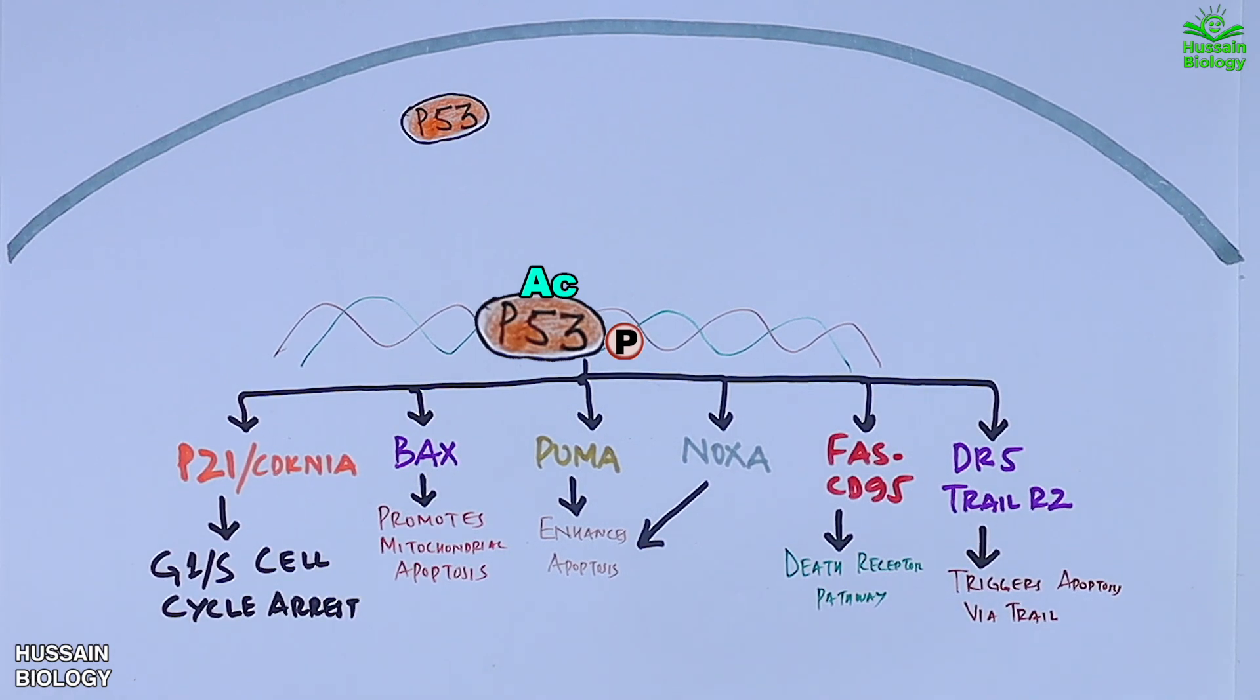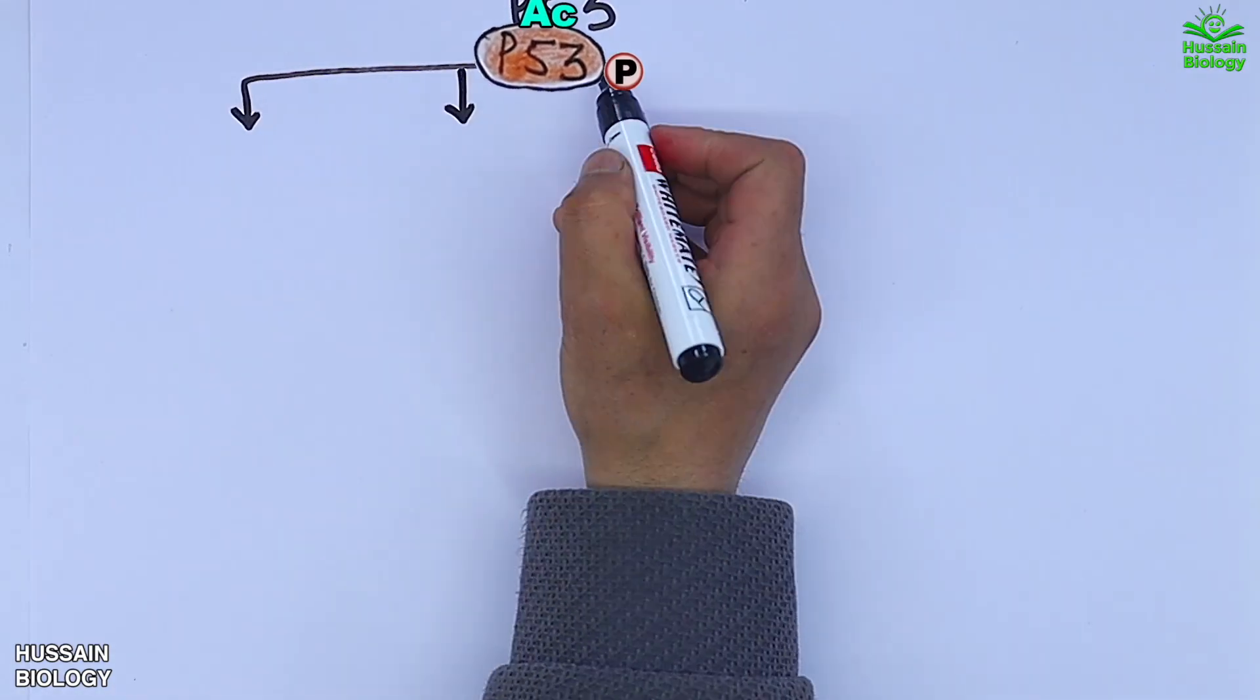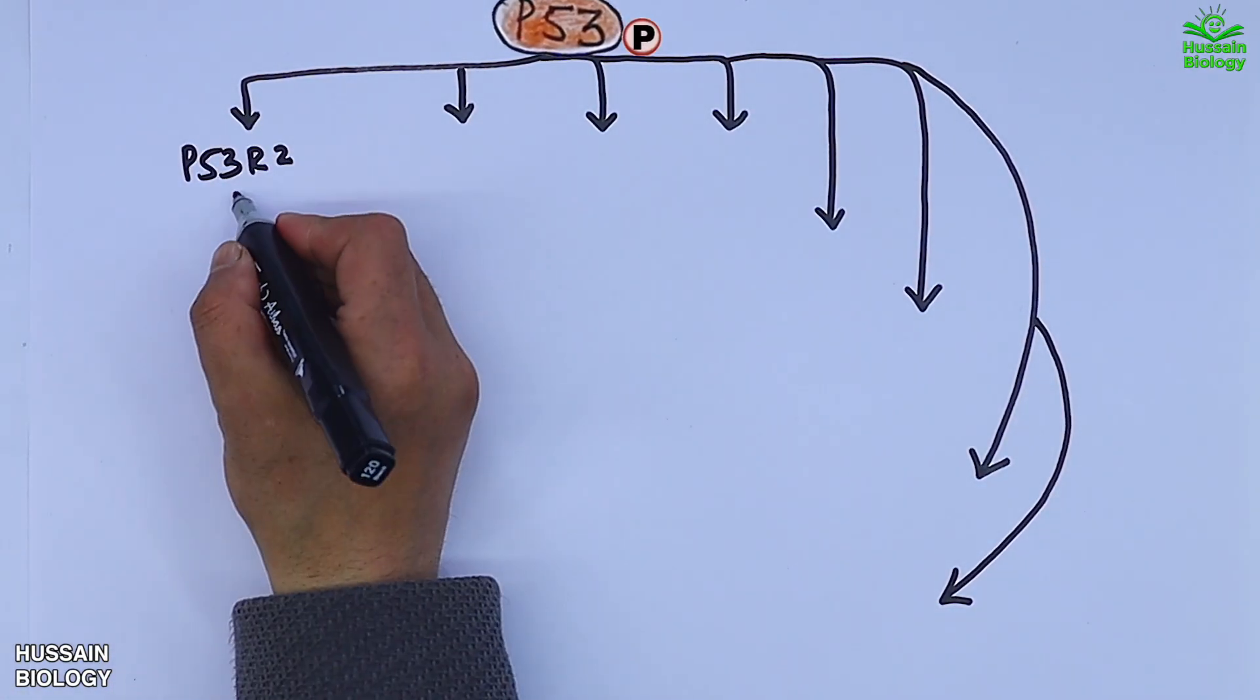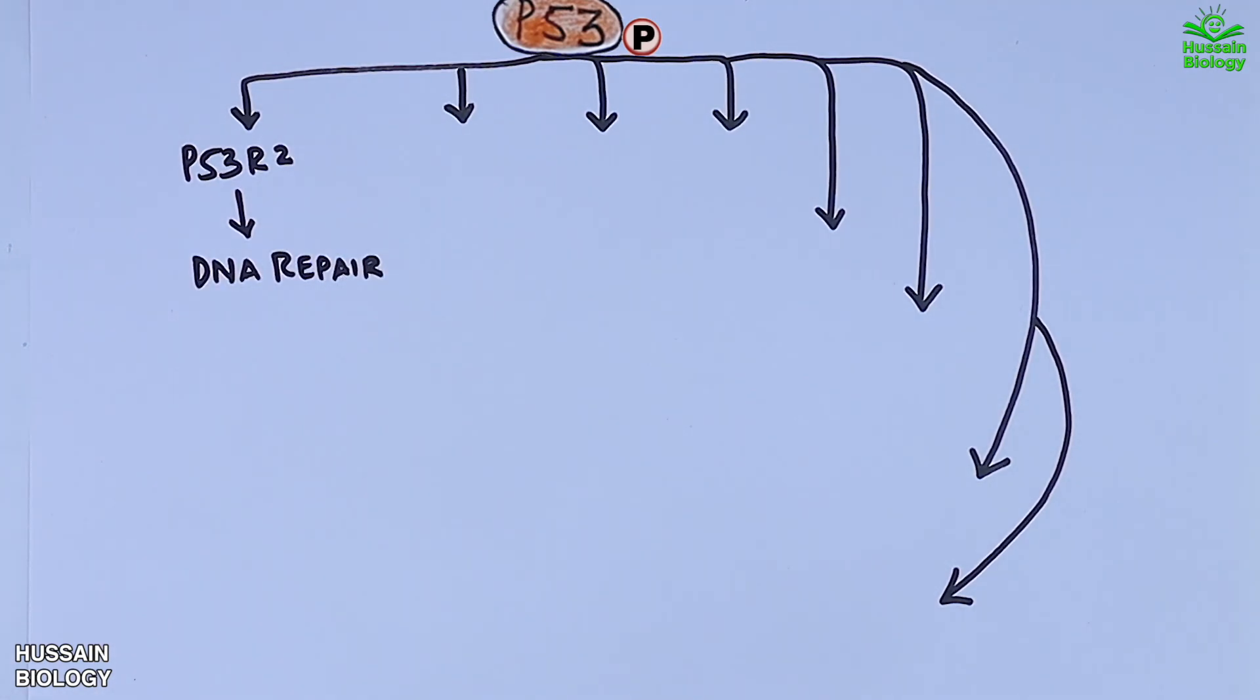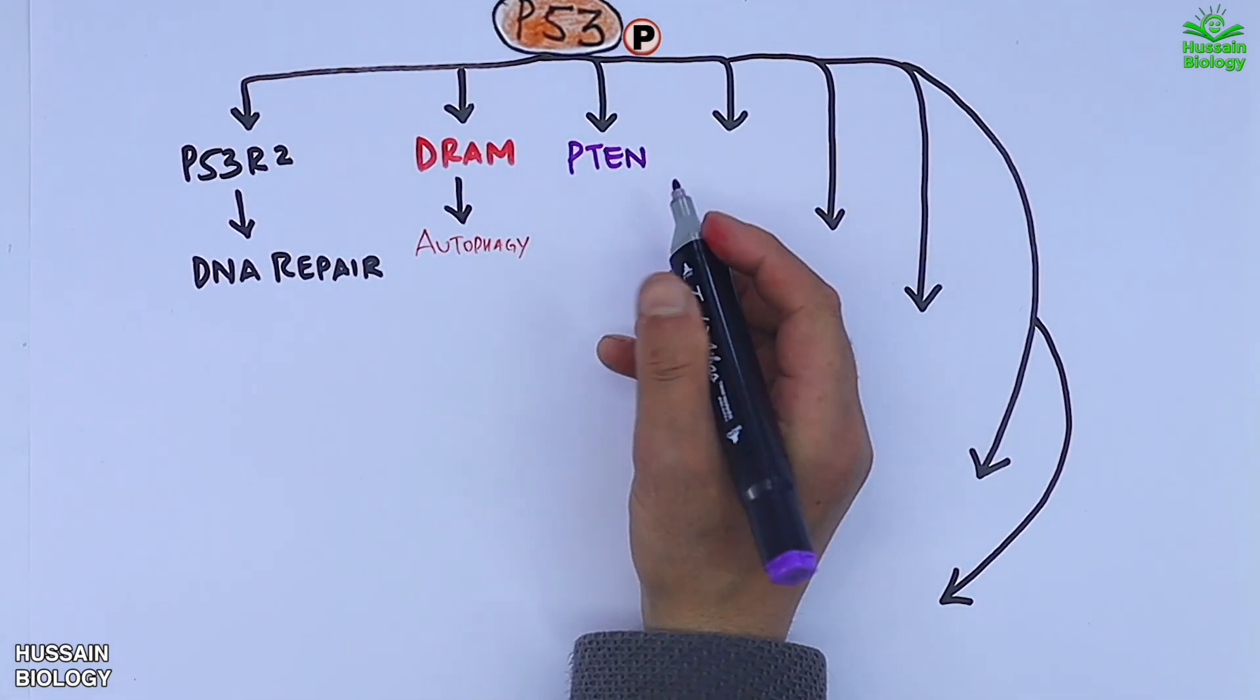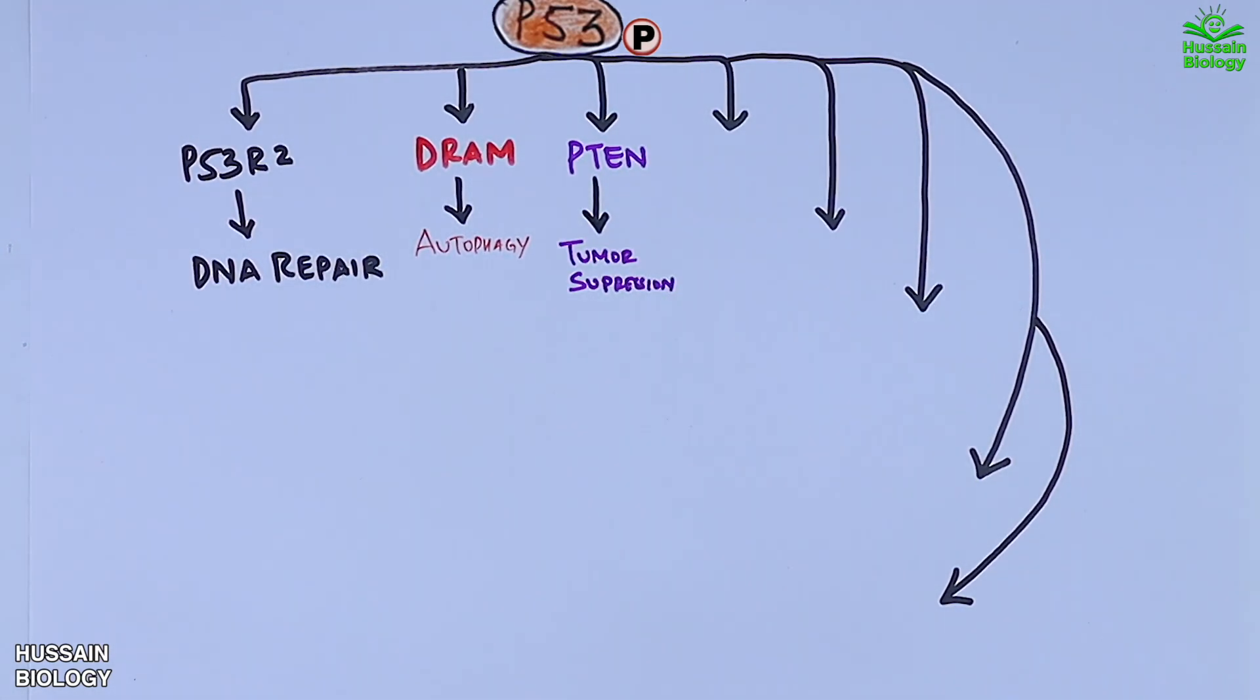Furthermore, this p53 targets many more downstream molecules. It activates P53R2 protein which mediates DNA repair. Second is DRAM activation by p53, which drives autophagy. Third is PTEN which drives tumor suppression. Fourth is TSP1 which mediates anti-angiogenesis.